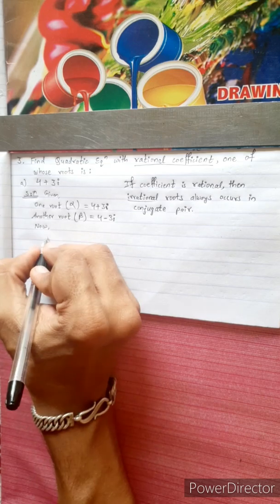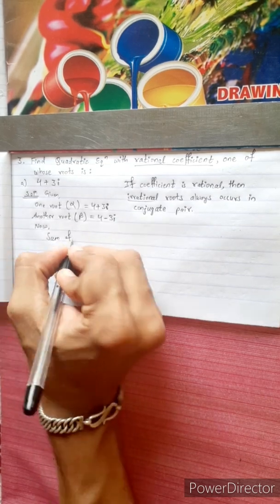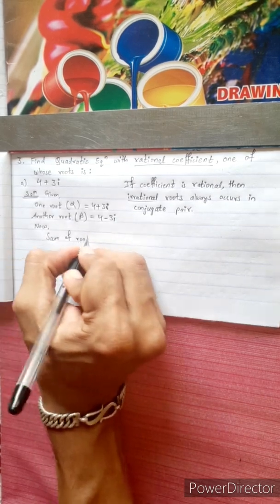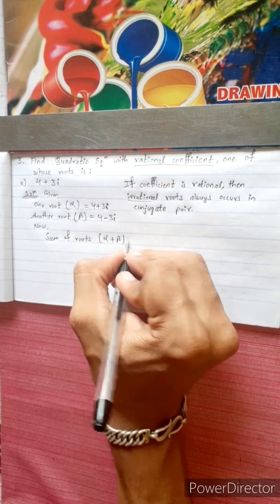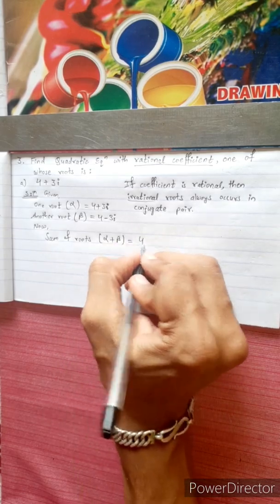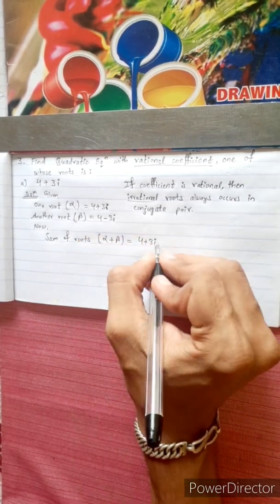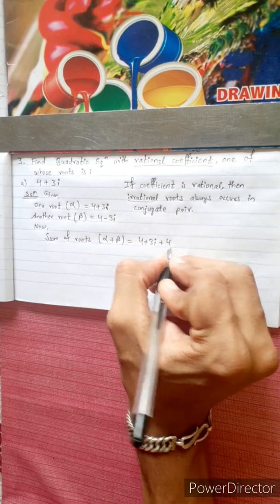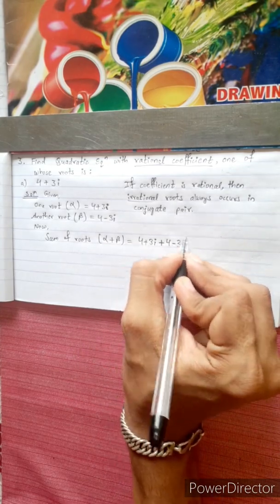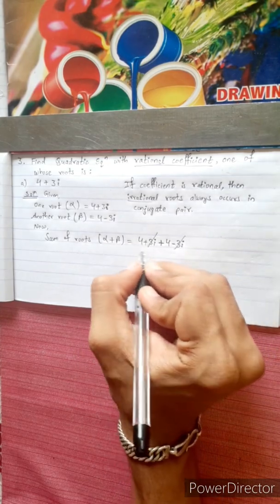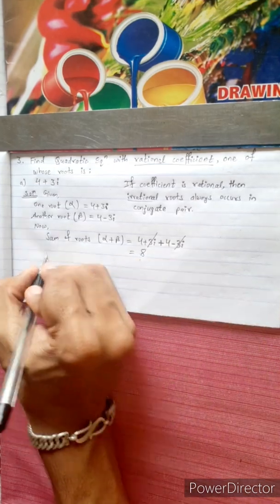Now, sum of roots: alpha plus beta equals (4 plus 3i) plus (4 minus 3i). The imaginary parts cancel: minus 3i plus 3i equals 0, and 4 plus 4 equals 8. So sum of roots equals 8.